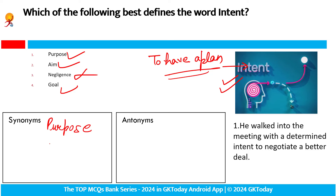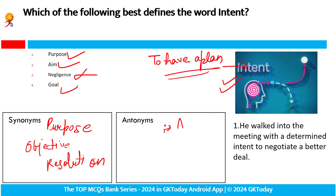Jabki negligence woh kya iska antonym hai. Objective — ya phir ek simple sa word resolution. Synonyms kya hain iske. Antonym ki agar ham baat karayein — goalless ho na, aimless, purposeless, apathy. Jabki neuras, emotionless, nothing.